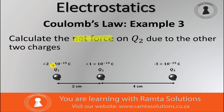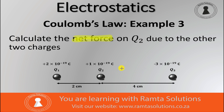We are told that charge one is positive 2×10⁻¹⁹ coulombs, charge two is positive 1×10⁻¹⁹ coulombs, and charge three is negative 3×10⁻¹⁹ coulombs. The distance between charge one and charge two is two centimeters, and the distance between object two and three is four centimeters.